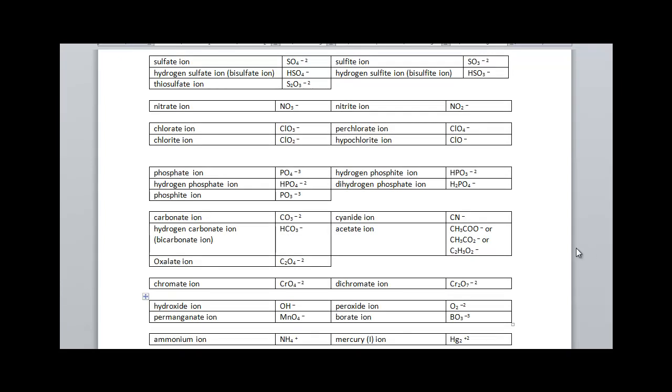You can Google polyatomic ions. You can find lots of tables of polyatomic ions. These are ions that exist as a group rather than just a single atom, a group of atoms. That group of atoms has a particular charge. For example, here on the top we see the sulfate ion and its symbol is SO4 and everything has a negative 2 charge.